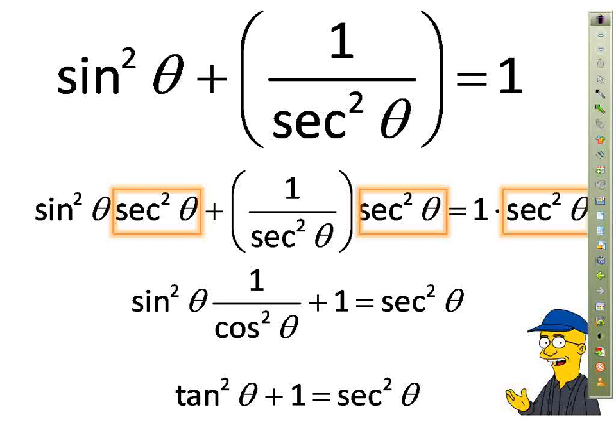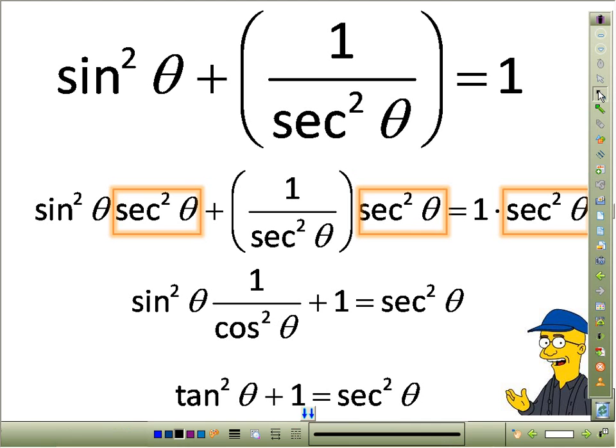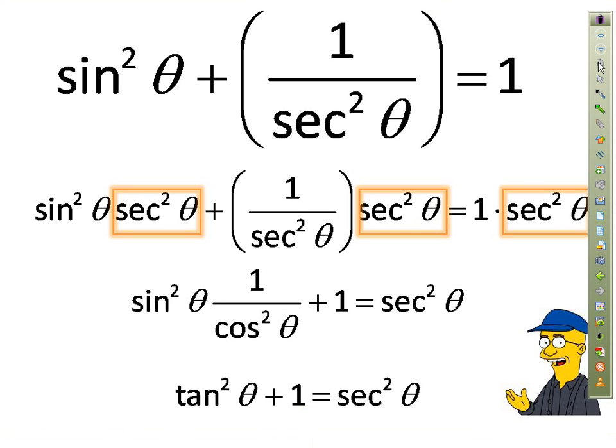So here we have the three Pythagorean identities: sine squared theta plus cosine squared theta equals one; cotangent squared theta plus one equals cosecant squared theta; and tangent squared theta plus one equals secant squared theta. Those are the three Pythagorean identities we're going to be using.